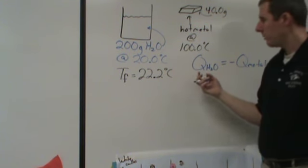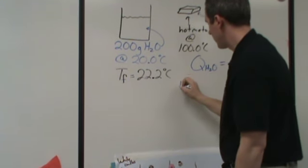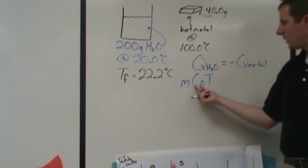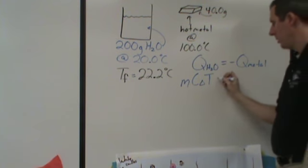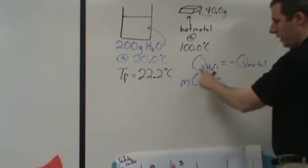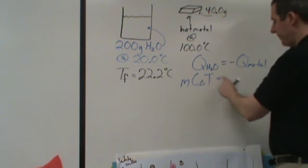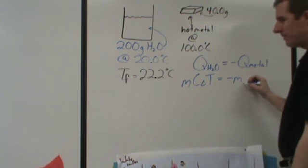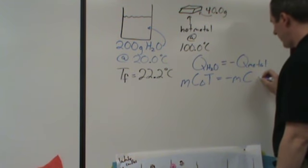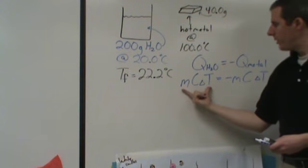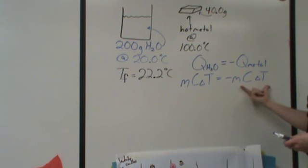And Q can be represented by the following equation. I call this MCAT, mass times specific heat capacity times temperature change. So what I'm going to do is I'm going to plug in the mass of the water, specific heat capacity of liquid water, and the temperature change of the water. And then I'm going to compare that to the negative of the mass of the metal times the specific heat of the metal times the temperature change for the metal. Every value in here is for the water. Every value in here is for the metal.